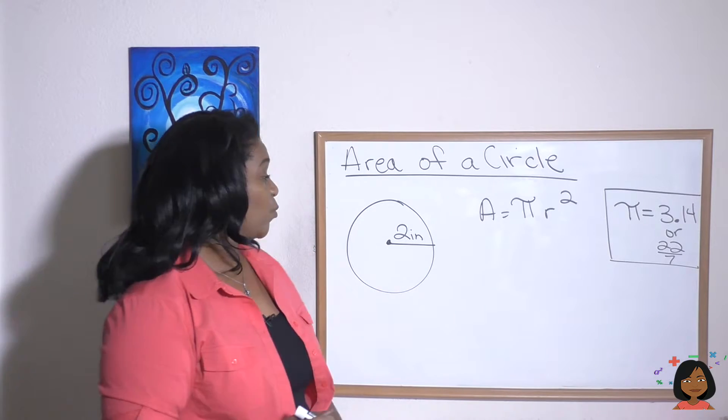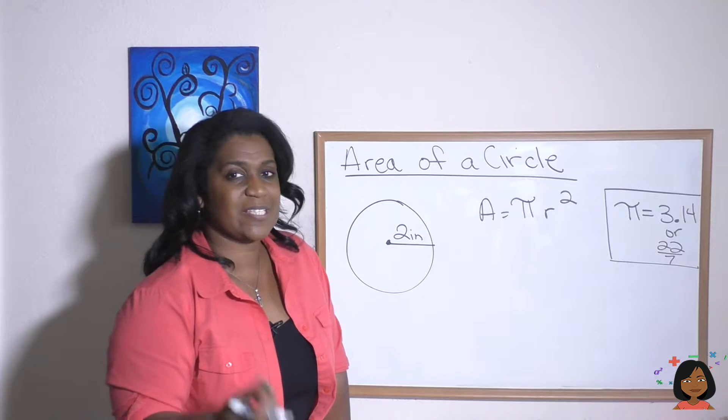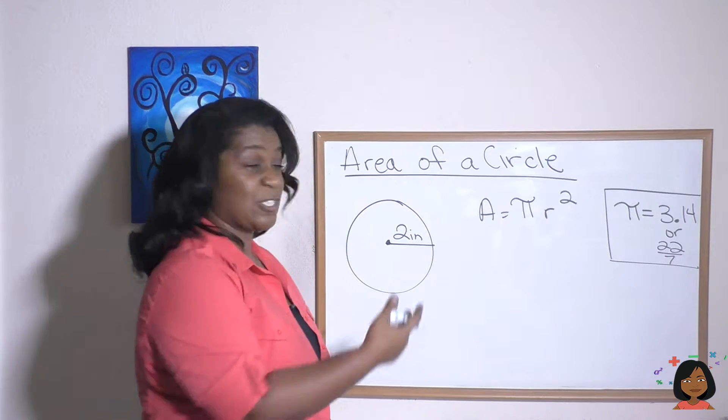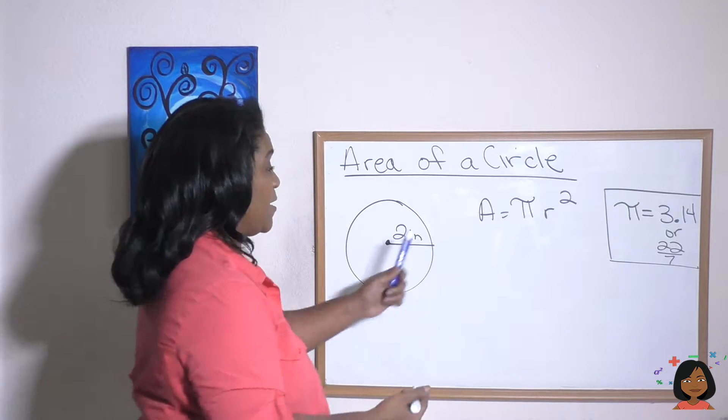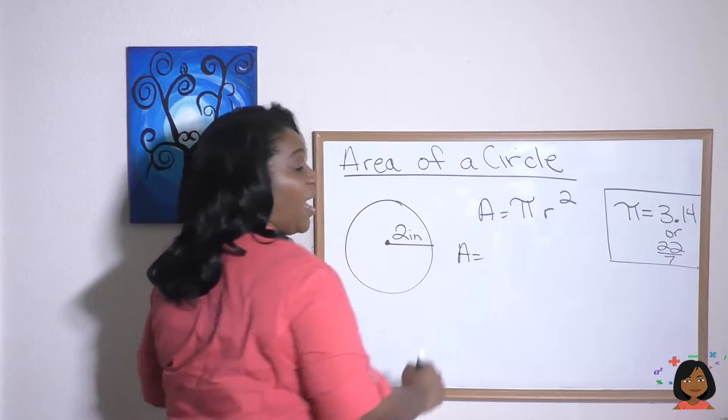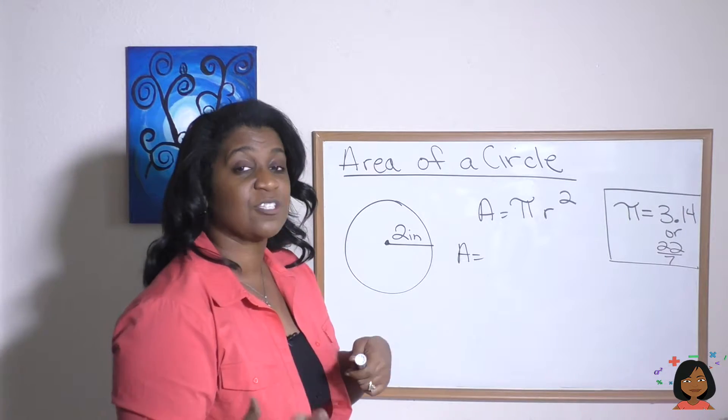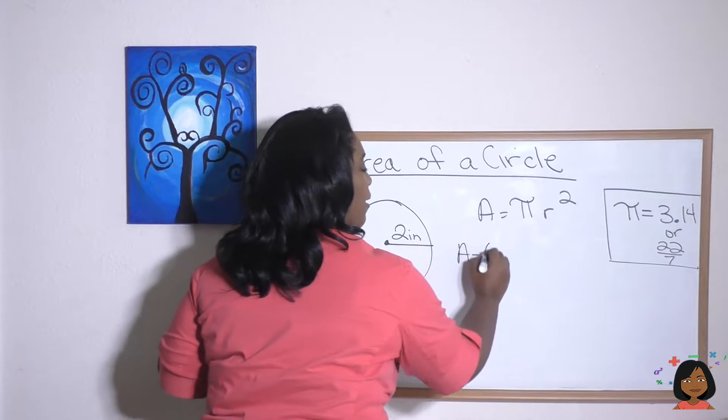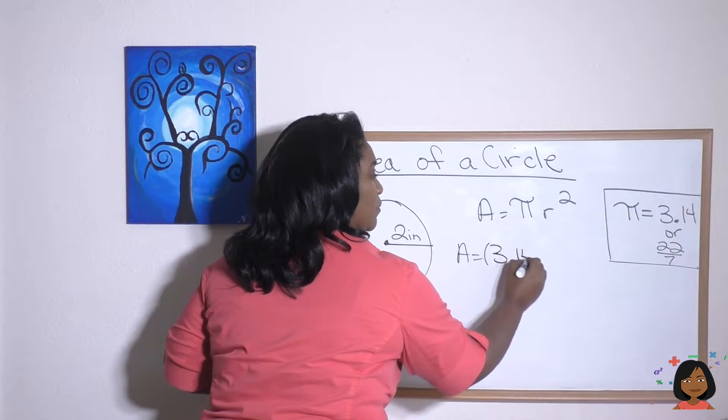Take a look at this example. We have a circle whose radius is two inches. So let's plug and play into our formula. The area is going to equal pi. For this instance, I'd like to use 3.14 for pi.